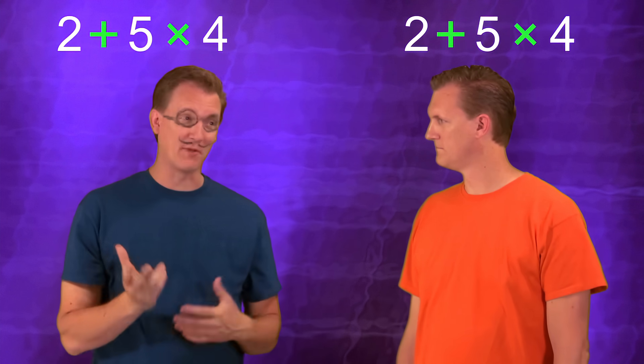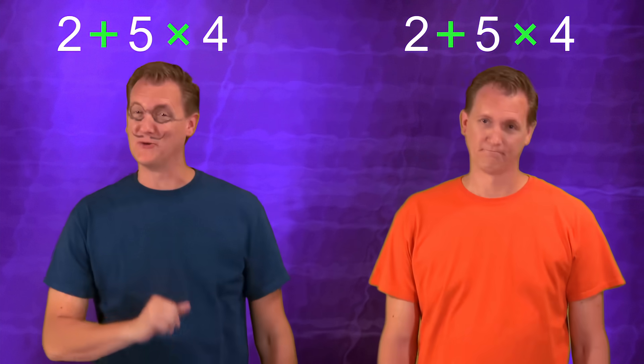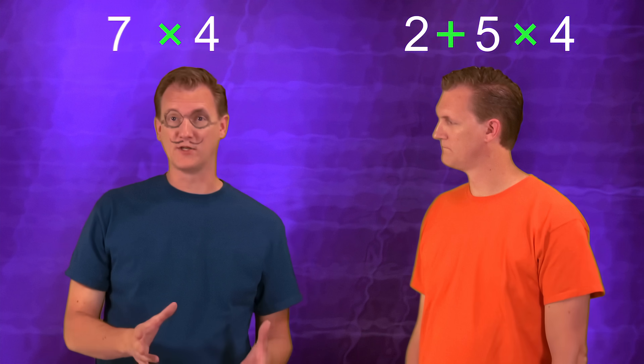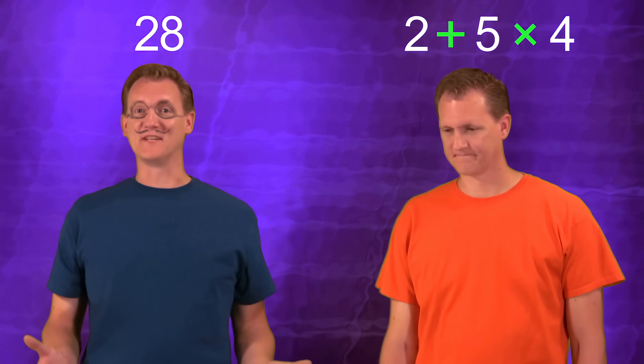Hmmm... I like addition better than multiplication, so I'm going to do that first. Let's see... 2 plus 5 gives us 7, and then I just multiply that 7 by the 4 and I get 28. That was easy, but you'd better not copy my answer.